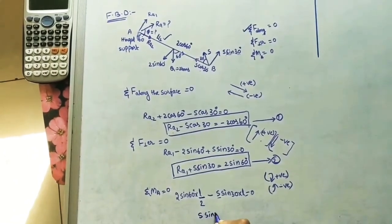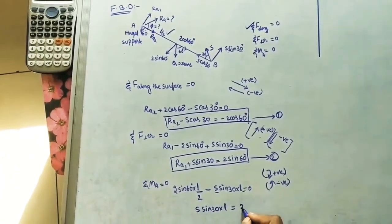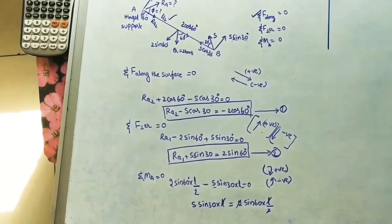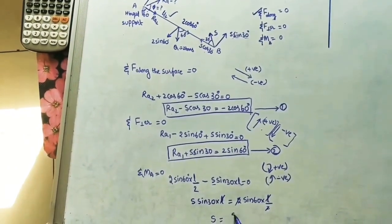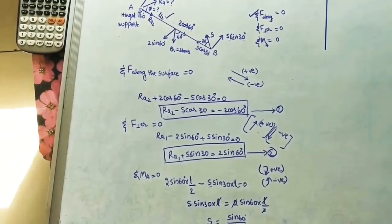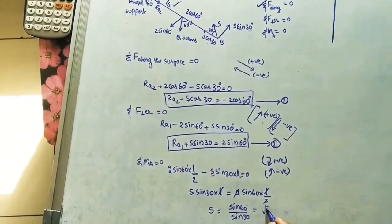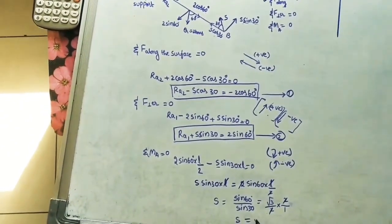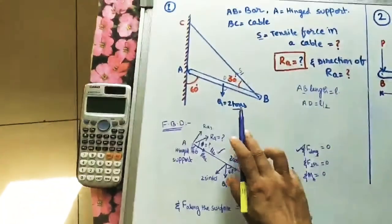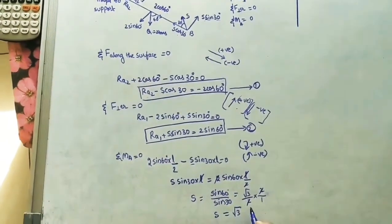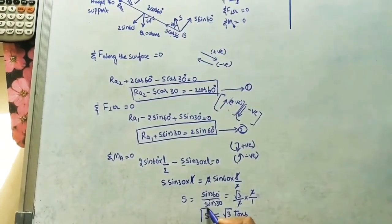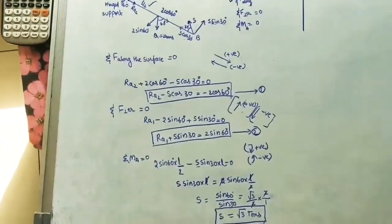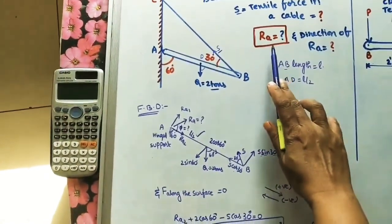From the moment equation: S sin 30 × L = 2 sin 60 × L/2. The 2 and L cancel. So S = sin 60 / sin 30 = (√3/2) / (1/2) = √3. The tension in the cable is S = √3 tons.